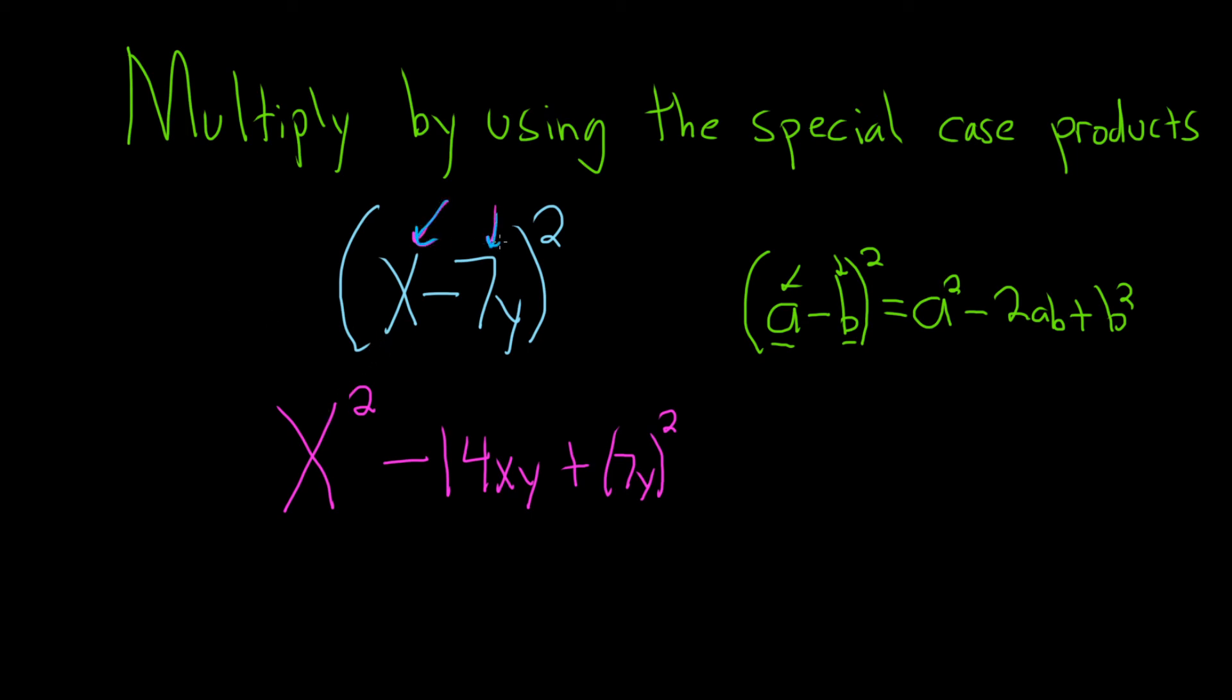You multiply the x and the 7y, so that's 7xy, but then you double it, so it's 14xy. And then you square the last one, and it's always a plus at the end.